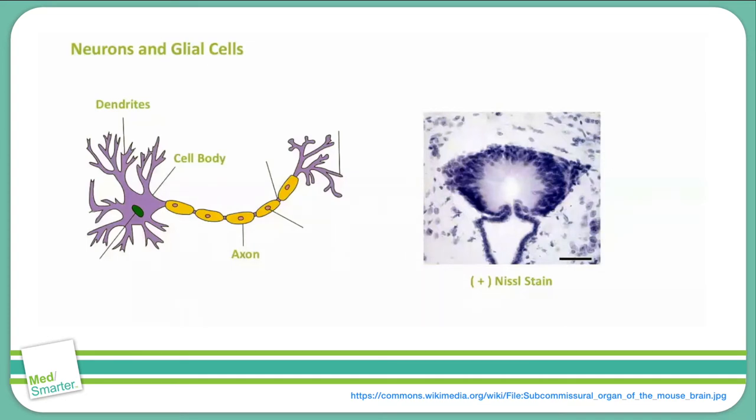Now there are a few other cells of the central nervous system that are essential to its function. These are astrocytes, microglia, oligodendrocytes, Schwann cells, and ependymal cells. Collectively, all these cells are known as glial cells. Glial cells is the general term for non-neuronal cells in the central nervous system. Now let's go through these cell types one by one and discuss their function.